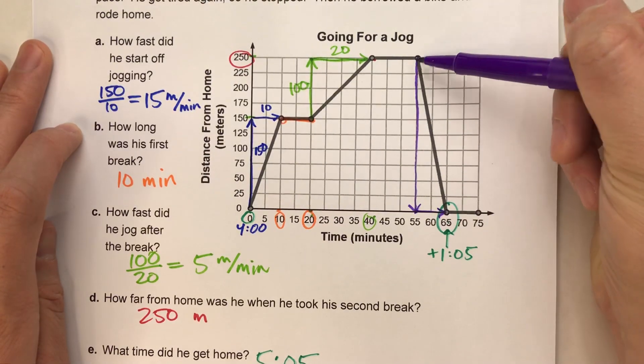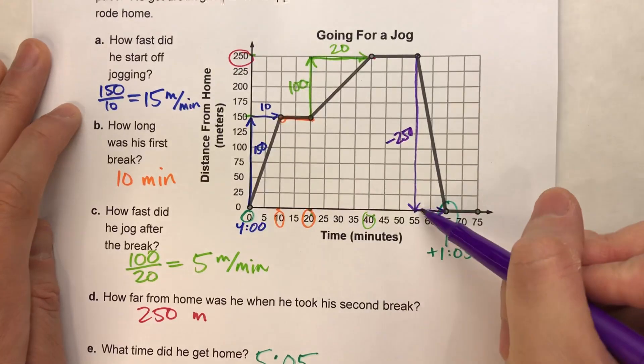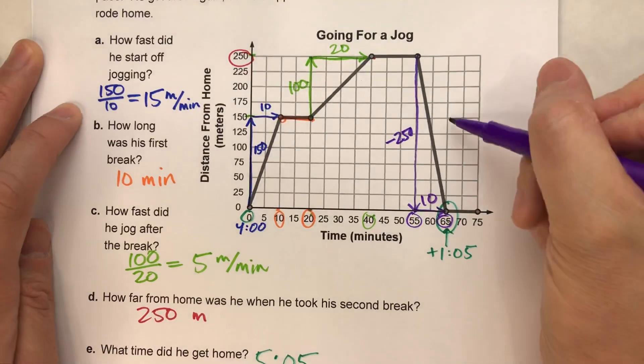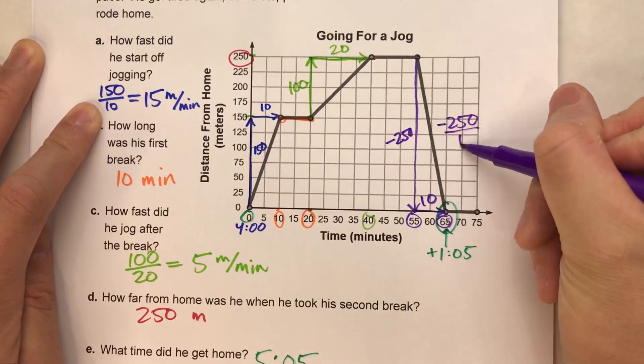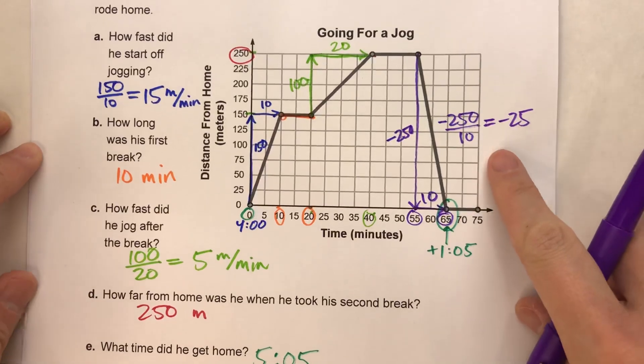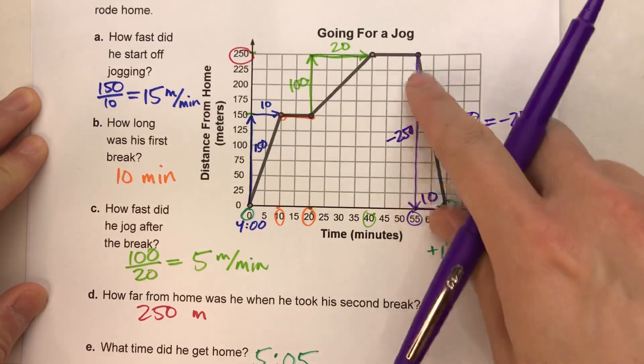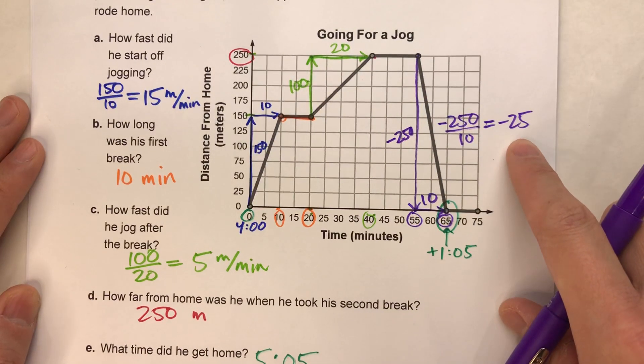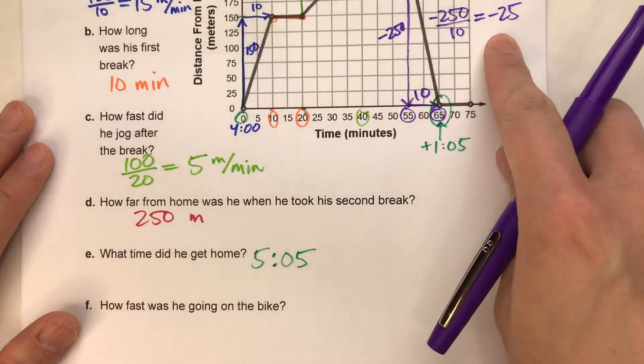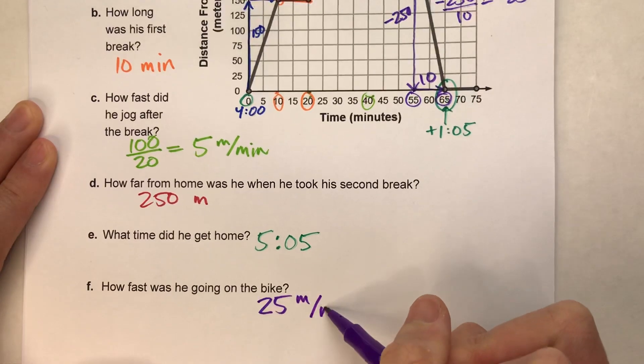But let's figure out what this slope is. So he started at 250 and went all the way to zero. So he would decrease 250 meters. And all that happened in a span from 55 to 65. So that happened in 10 minutes. So that slope is negative 250 over 10, which is negative 25. Now remember, you can't go negative meters per minute. What that represents is his distance from home is decreasing 25 meters per minute. So how fast is he actually riding? Well, if he's decreasing his distance from home 25 meters per minute, that means his bike is traveling 25 meters per minute.